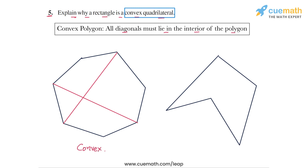But if you look at the polygon on the right, and if you join the vertex here, this vertex to this vertex here, then you can see that this diagonal lies outside the polygon.